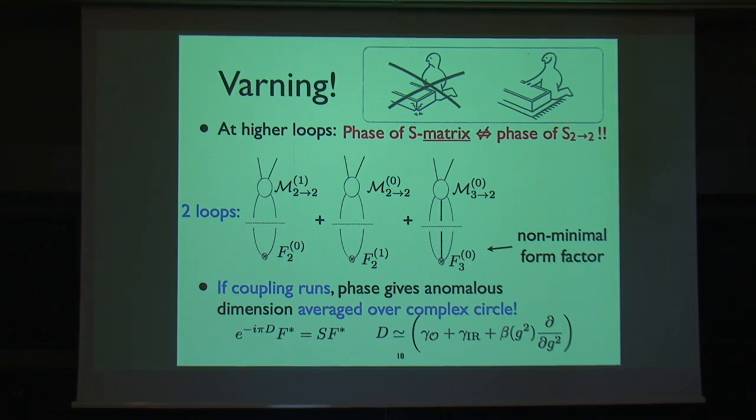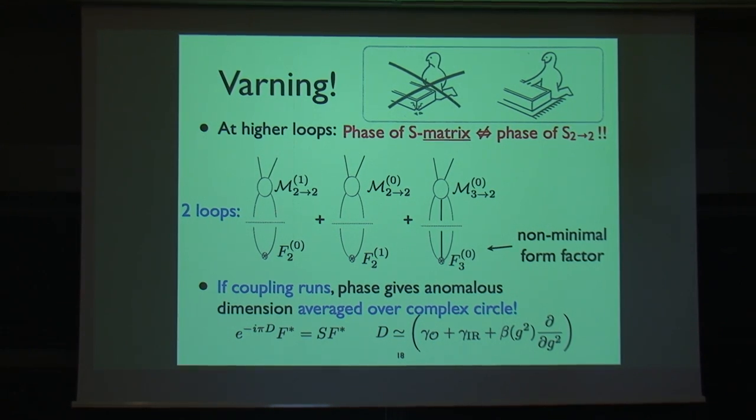Here's time for a warning. What I just did at one loop, to project the two-to-two S-matrix into partial waves, it's not going to work at two loops. The point is that in the formula that I said, that the phase of the S-matrix divided by π times minus one is equal to the dilation operator, that formula, the S-matrix is an operator. The phase of the S-matrix is not the same as the phase of some matrix elements, because we have to diagonalize it in principle. If you want to compute this dilation operator at two loops, you have to include not just this naive thing, which would be the phase of two-to-two scattering at one loop, but you also have to compute the correction to the state and also the mixing with higher particle numbers.